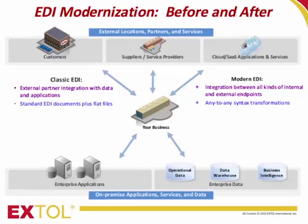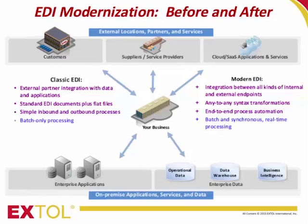Classic EDI moves and transforms EDI and flat file documents, while modern EDI offers what's normally called any-to-any transformation and interchange, including XML documents, database content, spreadsheets, and other kinds of data. Classic EDI is generally limited to implementing partner-facing inbound and outbound processes, whereas modern EDI offers general-purpose end-to-end process automation capabilities. Classic EDI systems process data usually in batch mode, whereas modern EDI systems offer both batch and synchronous message-at-a-time processing.